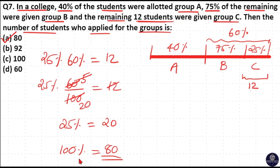So option A is your answer. That is, the total number of students is 100%, which equals 80. Because 25% of the remaining is 20, that means 100% of students is 80.